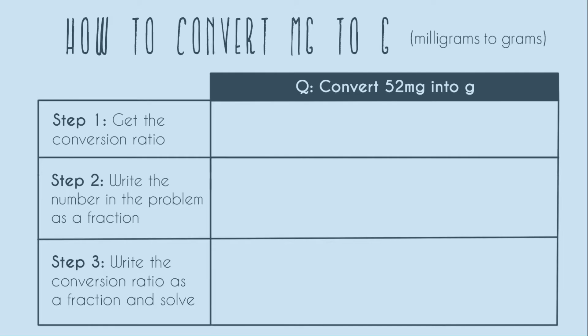So just like in every other conversion problem, there's a unit we start in—that's milligrams—and there's a unit that we end in—that's grams—and we need to know the ratio between these two things. So you can know this from being told in class, from knowing your metric system prefixes, or if you don't know, just googling it.